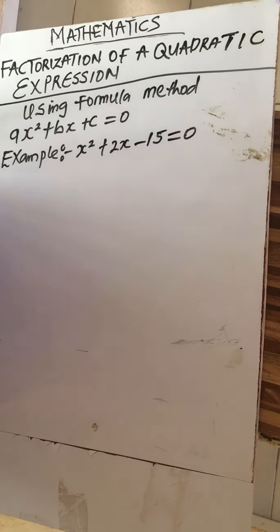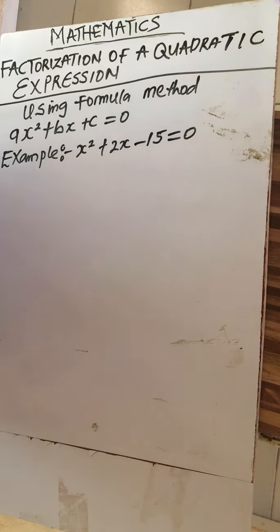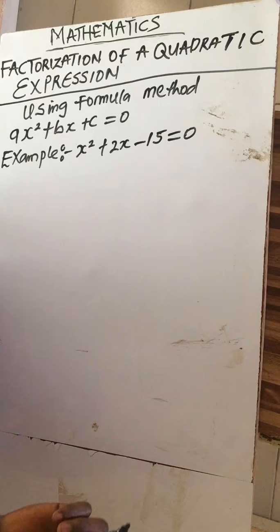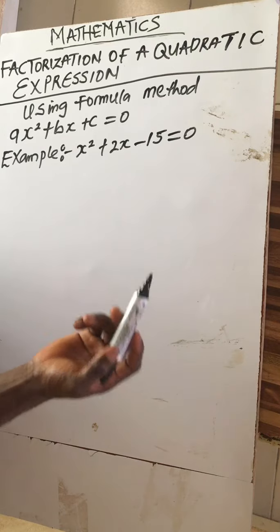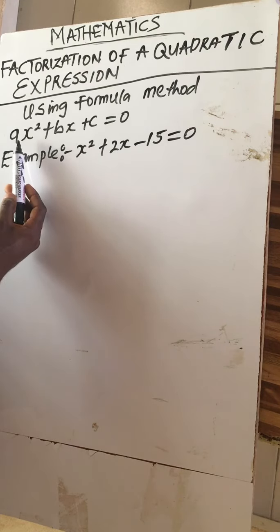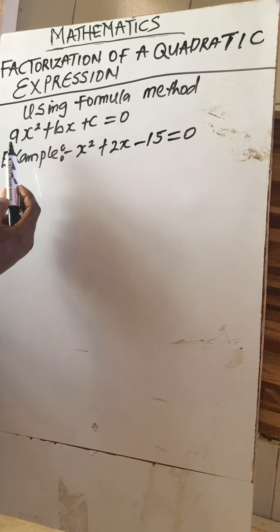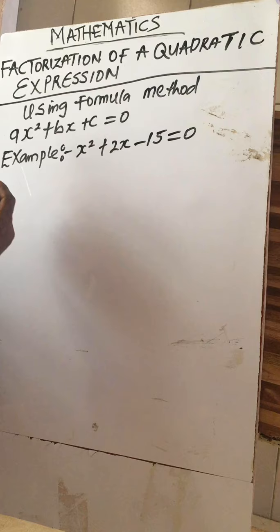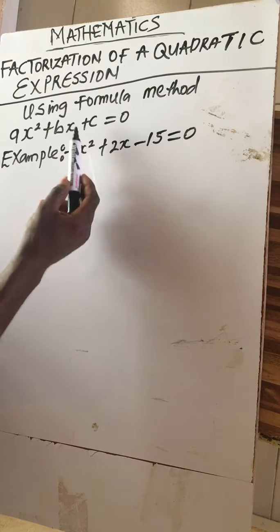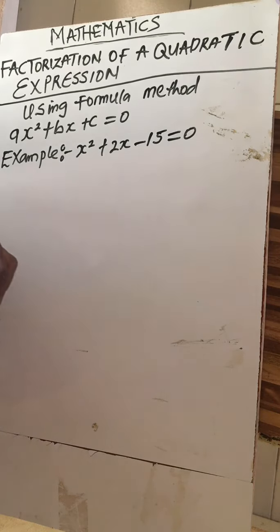Today we're doing factorization of a quadratic expression using the formula method. First, let's explain this equation. The first coefficient is the coefficient of x squared, the second coefficient is the coefficient of x, which is the base two, and here the constant is zero — so we're using the formula method.